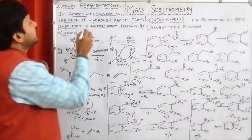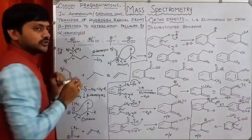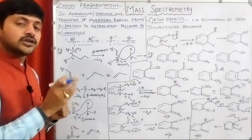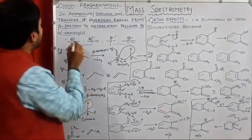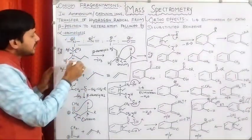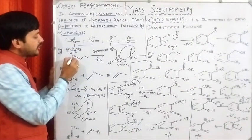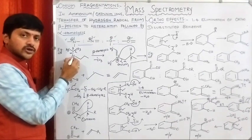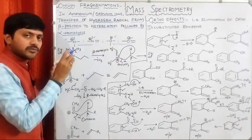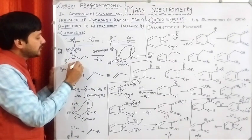In such type of cases, we need to transfer the hydrogen radical from the beta position to the heteroatom, followed by alpha homolysis. Let's see the example. It is an amine, in which nitrogen contains lone pair electrons. From the lone pair electrons, we are generating the molecular ion by removing one electron.